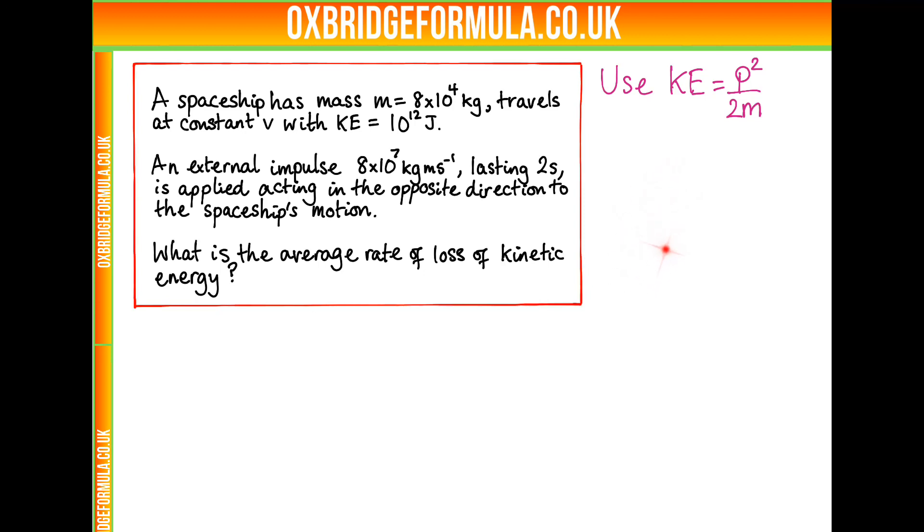So our initial momentum, p_i squared, is 2 times the mass times the kinetic energy. So initial momentum is just 4 times 10 to the 8, where I've added a plus just to signify that it's in the positive direction.